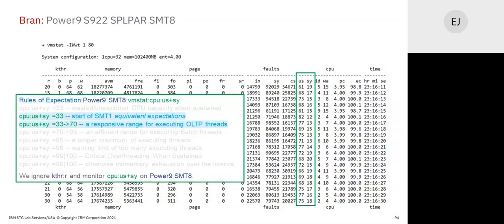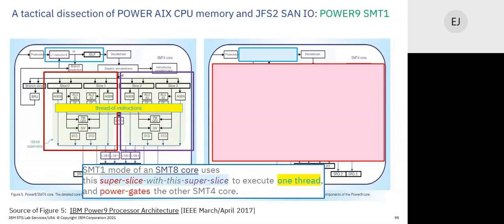33 to 70 at SMT8 is great for OLTP. What about SMT1 on Power9? On the left, two super slices focus on executing one thread, meaning no part of the core is unused. At SMT1 on Power9, we actually power down the other SMT4 core — there are two SMT4 cores fused together sharing the same L2 cache. Since we power one side down, we spin the clock cycle up a lot higher and the one thread runs very fast, with more aggressive prefetch.